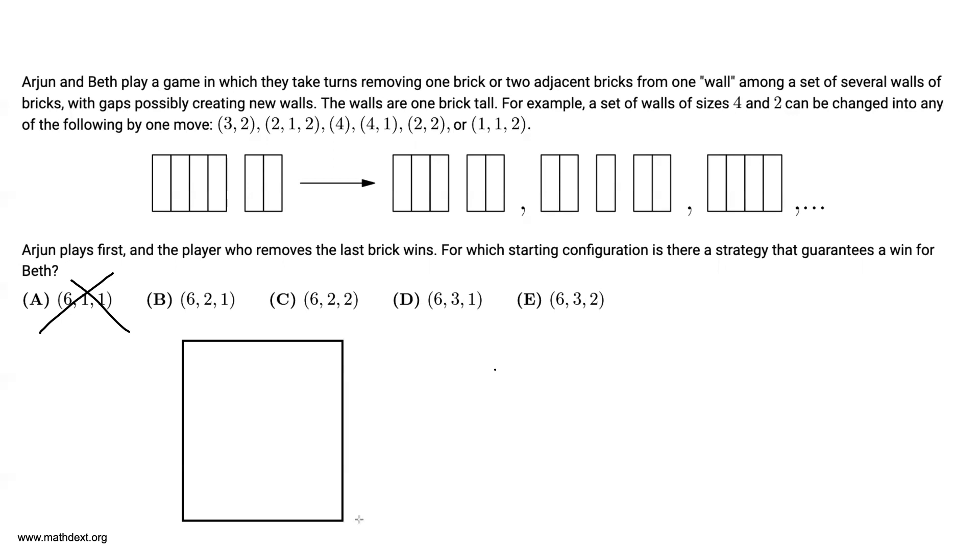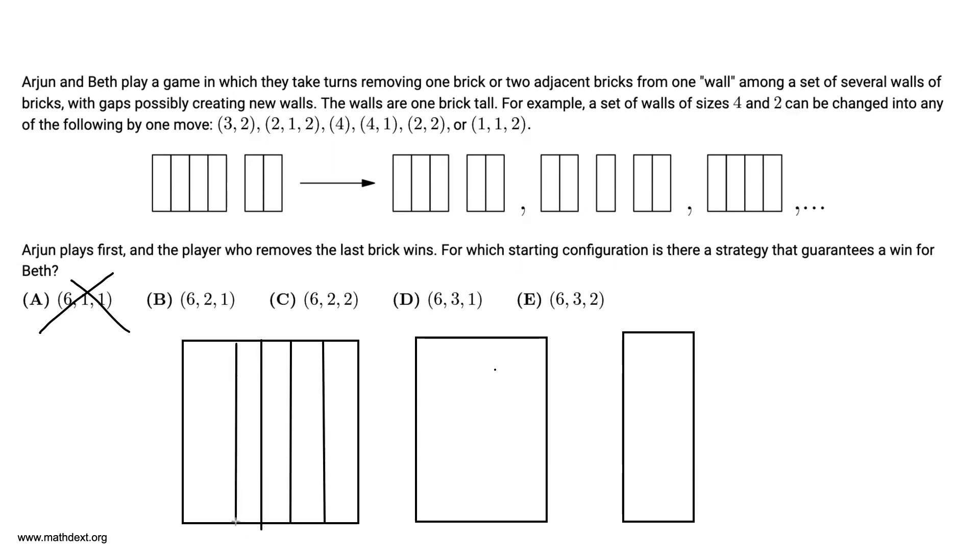because if we have a 6, a 3, and a 2, what's going to happen is, so first of all, this one's a 6, this one's a 3 over here, and this one's a 2. So Arjun can remove this middle block over here. And what's that going to leave Beth with? It's going to leave Beth with a 3-2-3-2 split.